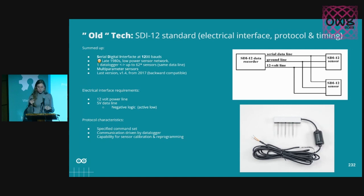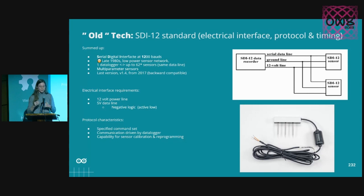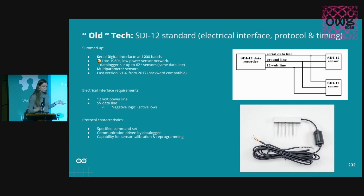The standard has been improved here and there, with some paragraphs reworded for clarity. The latest version is from 2019. All versions are backwards compatible, meaning no matter if the sensor or data logger was developed following version 1.0, 1.2, or 1.3, they can all be used at the same time.